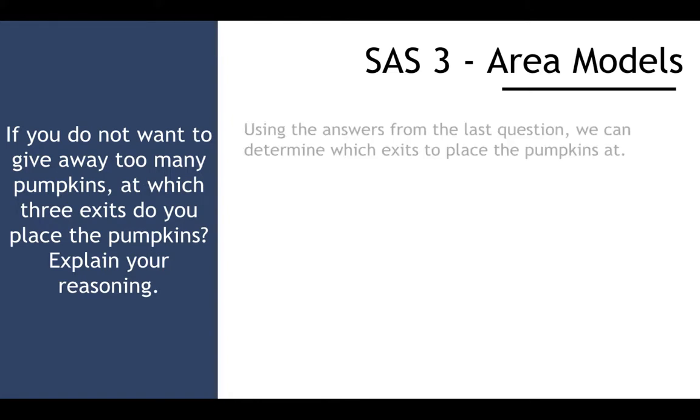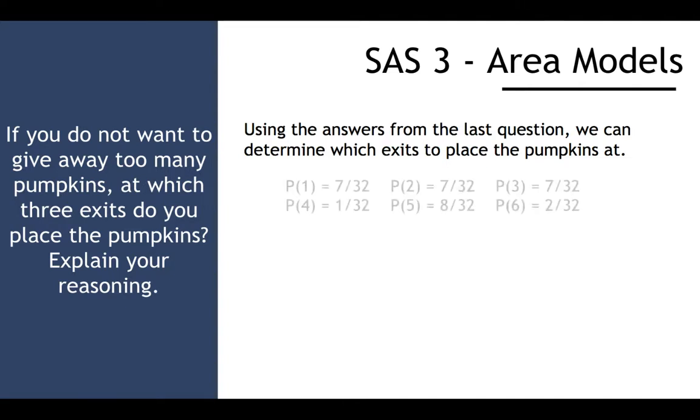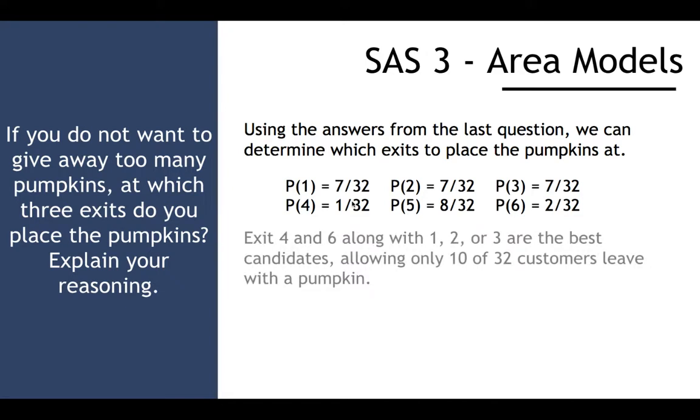Now if you do not want to give away too many pumpkins, at which three exits do you place the pumpkins and explain your reasoning? Using the answers to the last question, we can determine which exit to place the pumpkins at. Which one has the least? Well, exit 4 and 6, which are 1 and 2, or 3, are the best candidates. 1 or 2, we add them together, it's 3, allowing only 10 of 32 customers to leave with a pumpkin.